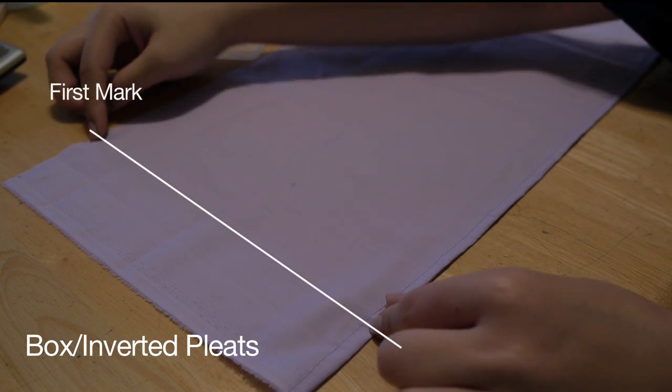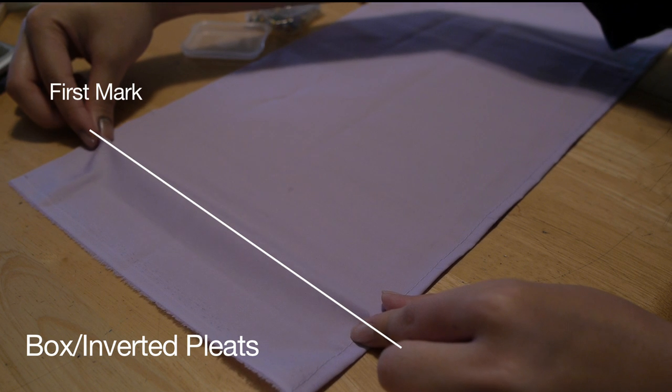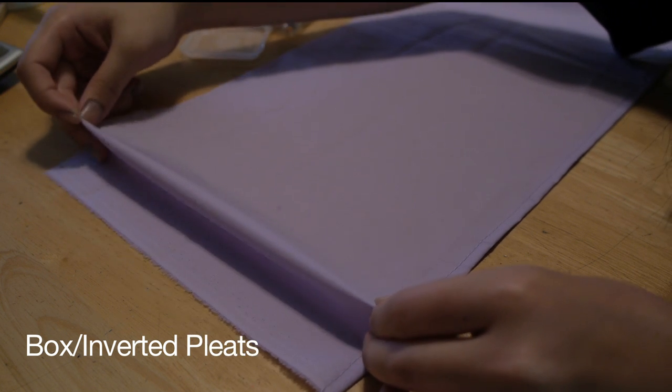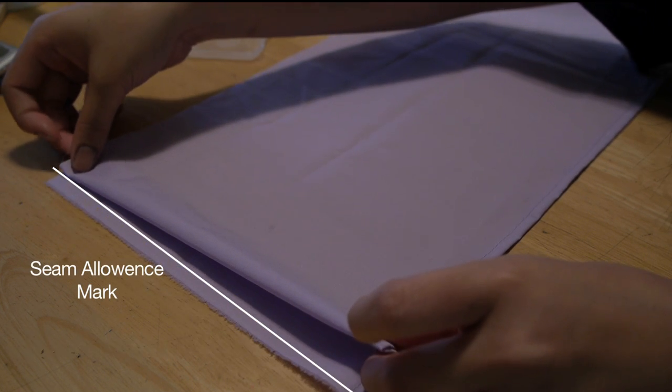To make box slash inverted pleats, start off at the first mark and bring it to the seam allowance mark. Pin into place.